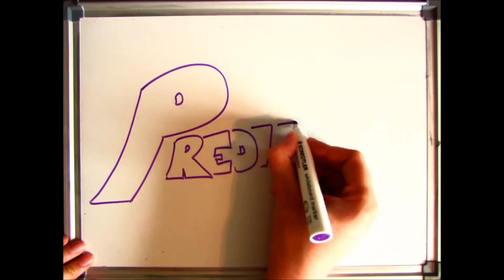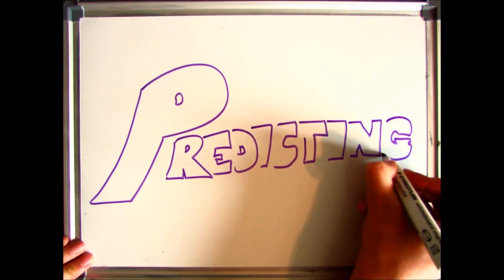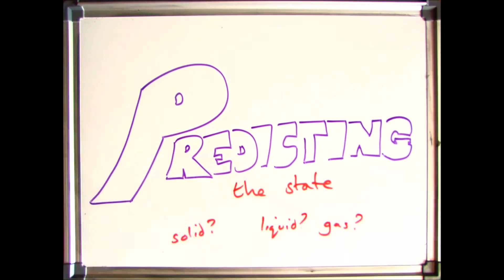This section is going to have a look at what happens when you're given a melting point and a boiling point and you're asked to predict what the state of the product is.